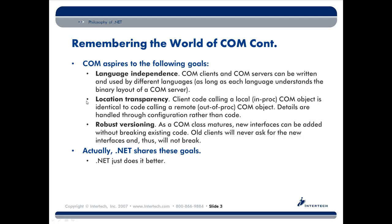COM also had something called location transparency — regardless of the distance between the client program and the server component, you didn't have to change your programming model. So whether you were doing an out-of-process call or a remote call to a different machine, you had a very similar programming model. And finally, every single thing in COM was based on interface-based polymorphism. If you were a C++ programmer, you had a lot of COM interfaces to implement, but the idea was good — it gave us a nice versioning system. These ideas are not abandoned in .NET, but they're improved upon, simplified, and made much more robust.